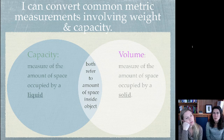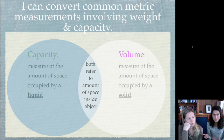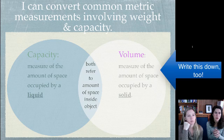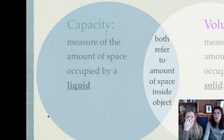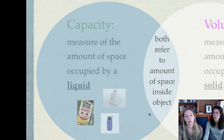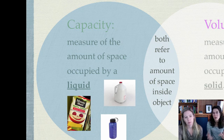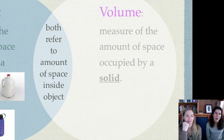The first idea is we just want to make sure that you understand the difference between capacity and volume. Recreate this little Venn diagram in your math notes because it's an important idea. Capacity is when we're talking about the measure of the amount of space occupied by a liquid. So here's my little pictures to help you out with that. When you're talking about any kind of liquid - milk, juice, water, tea, all that good stuff - you are figuring out how much space is occupied within that container.